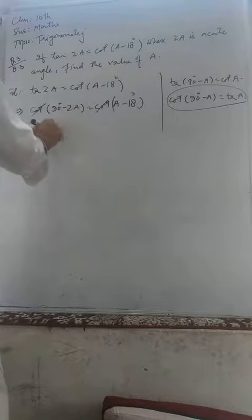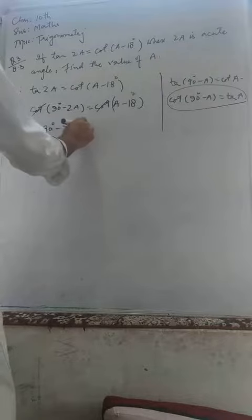90 minus 2A equals A minus 18, which implies that 90 plus 18 equals 3A.